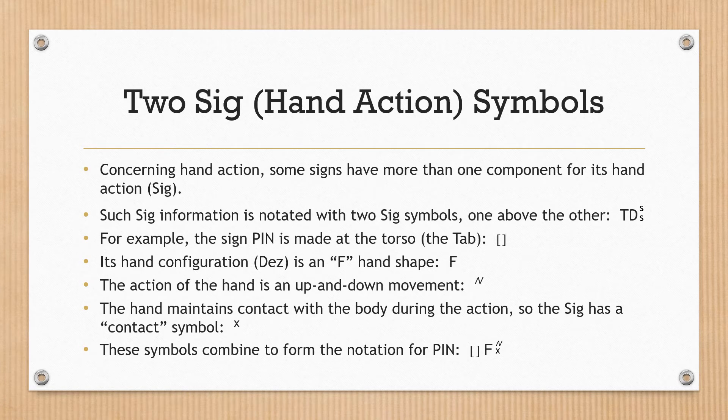Two SIG hand action symbols. Concerning hand action, some signs have more than one component for their hand action SIG. Such SIG information is notated with two SIG symbols, one above the other. For example, the sign PIN is made at the torso — the TAB. Its hand configuration DES is an F hand shape, capital letter F. The action of the hand is an up and down movement. The hand maintains contact with the body during the action, so the SIG has a contact symbol. These symbols combine to form the notation for PIN.